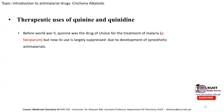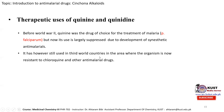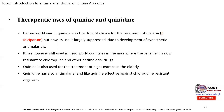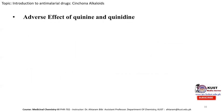Therapeutic uses: before World War II, quinine was the drug of choice for malaria because it was active against Plasmodium falciparum. Nowadays its use has been largely superseded by synthetic anti-malarial drugs; however, it is still used in developing countries where organisms are resistant to chloroquine. Besides malaria, quinine is used for the treatment of night cramps in the elderly. Quinidine is also used as an anti-malarial drug effective against chloroquine-resistant organisms.